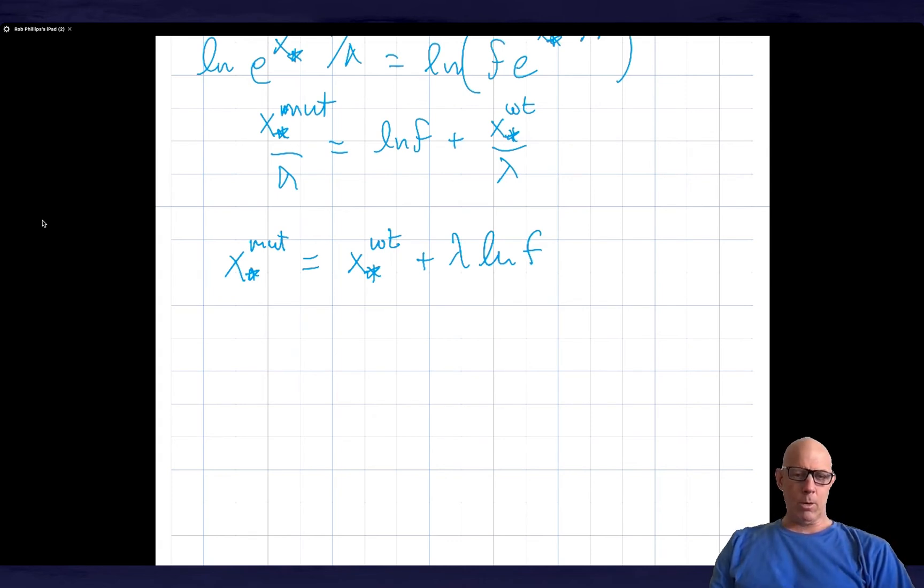Let's make sure that qualitatively this does what we expect. f greater than 1 implies that log of f is positive, is greater than 0. And therefore, we have a shift to the right.